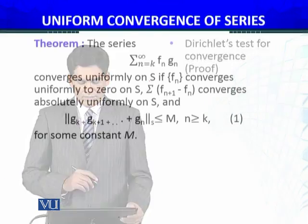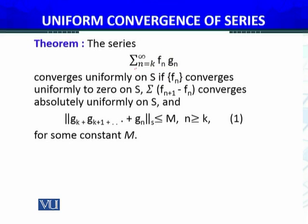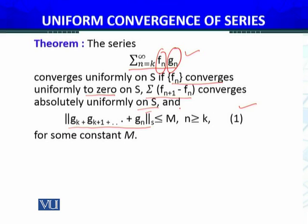We have to prove it formally. The series of functions, which is a product of two functions f and g of x, converges uniformly on S, if fn converges uniformly to 0 on S, and this series converges absolutely uniformly on S. Let's prove it formally.